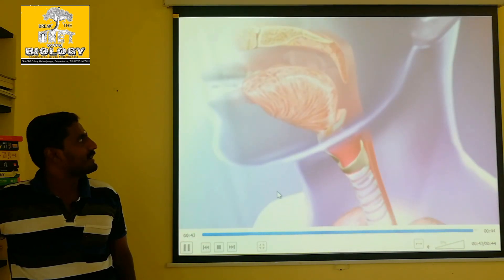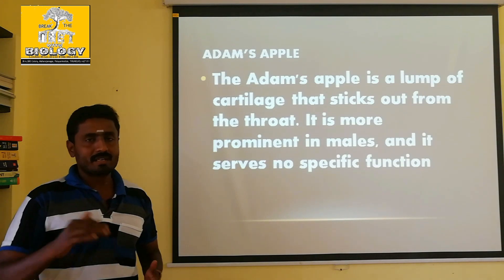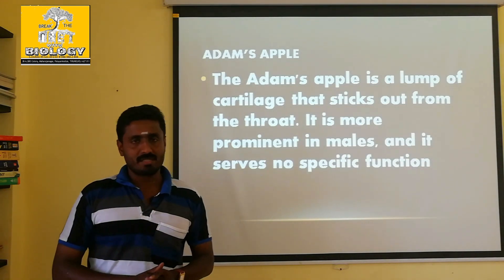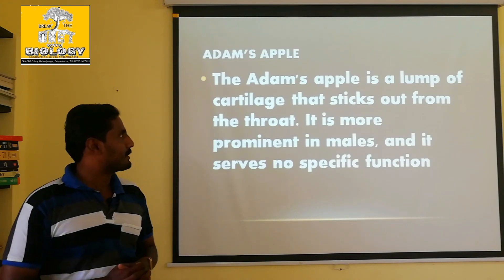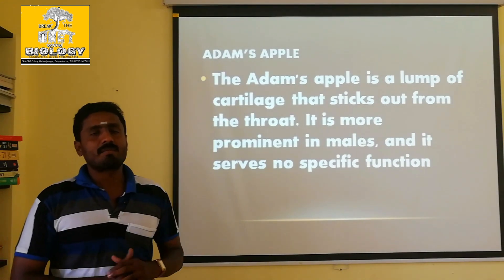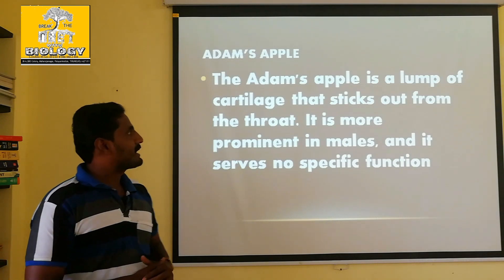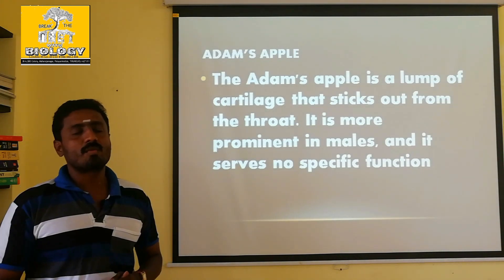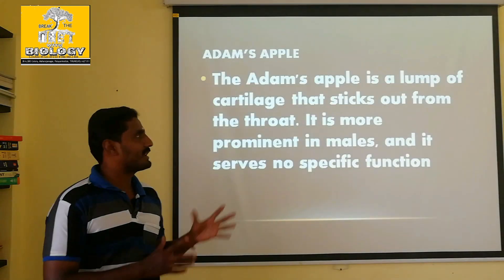The answer is that the epiglottis is the correct option. Now, sexual reproduction involves primary and secondary sexual characters, especially in males. This is a form of bulging — the Adam's apple is a lump of cartilage that sticks out from the throat. This is a primary sexual character in human males.